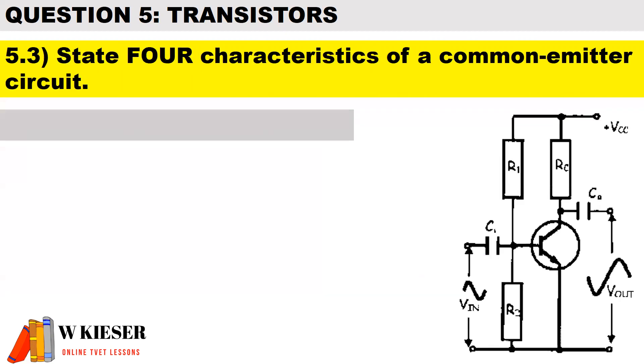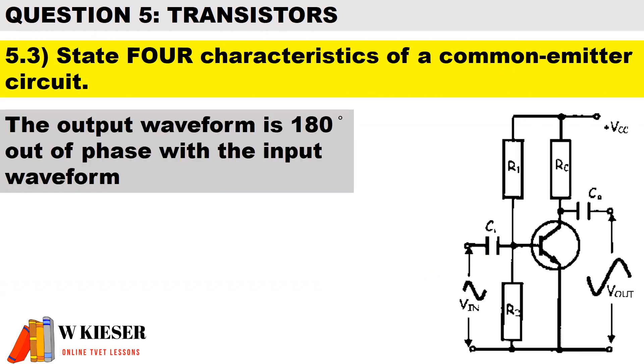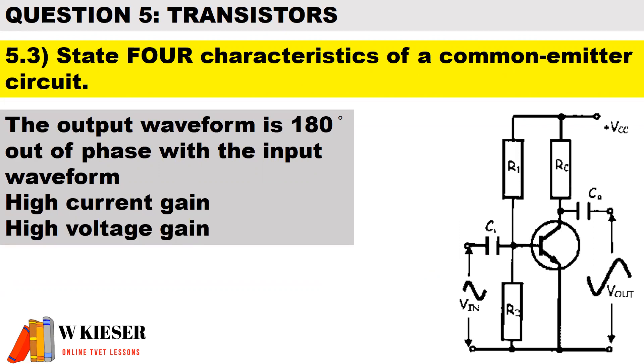In question 5.3, state the characteristics of a common emitter circuit. The output waveform is 180 degrees out of phase with the input waveform. We have high current gain and high voltage gain.